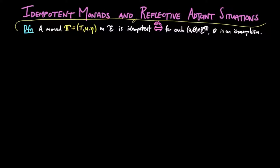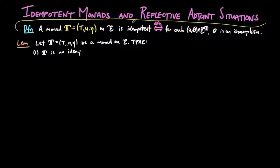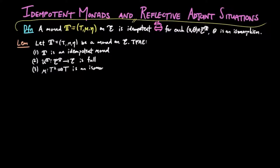We start by giving equivalent conditions for an idempotent monad. Let T be a monad on the category E. The following are equivalent: 1. T is an idempotent monad. 2. The forgetful functor ut is full. And 3. The multiplication mu for the monad is an isomorphism.